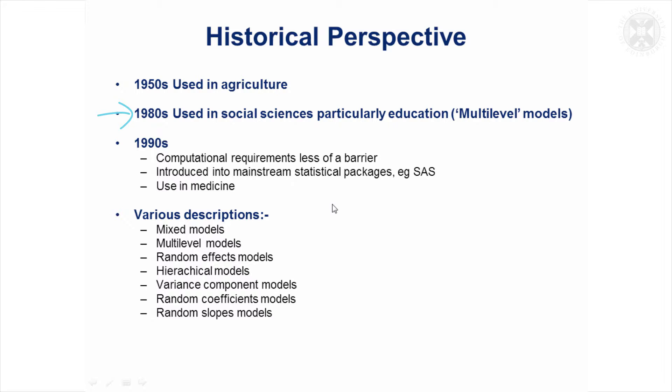Also in the 1980s, the social scientists started using what they called multi-level models, which are really—well they are the same thing. It's just grown up with a completely different terminology, but the basic idea is the same.